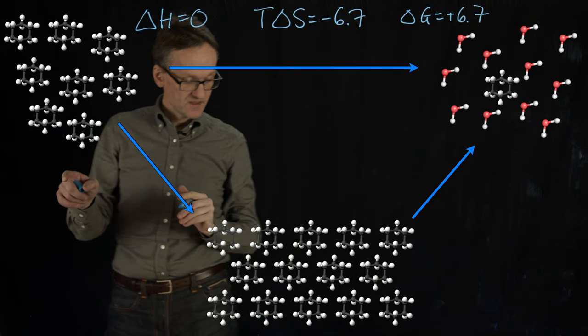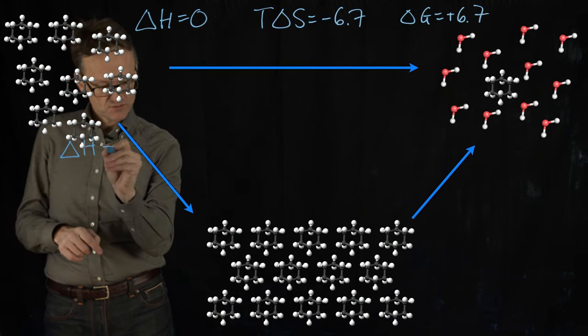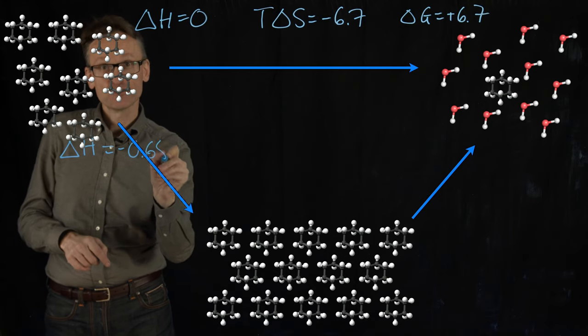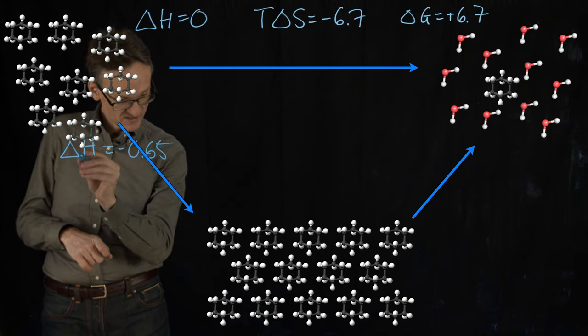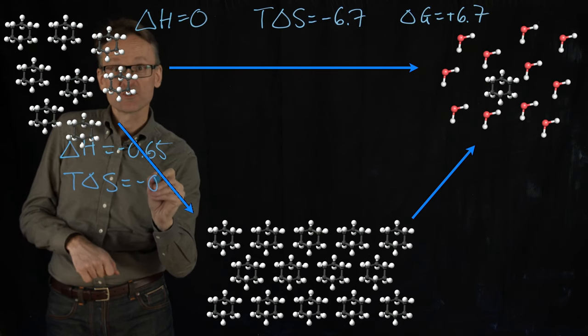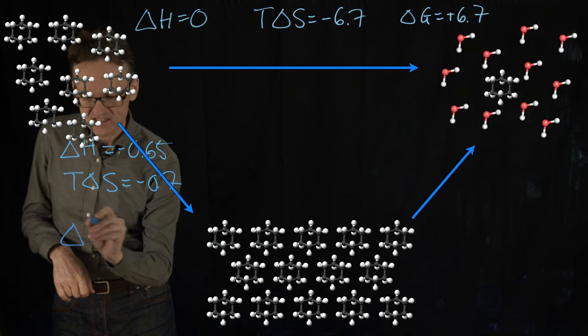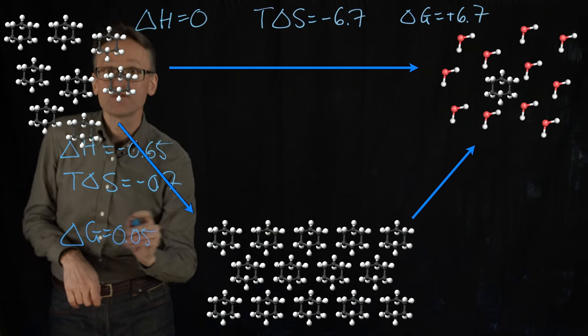Here we do the same thing as we did before, so that would get to set ΔH is roughly minus 0.65. I do not know this by heart, that's why I'm looking at my notes. And TΔS equals roughly minus 0.7. And as a consequence ΔG would be roughly plus 0.05.